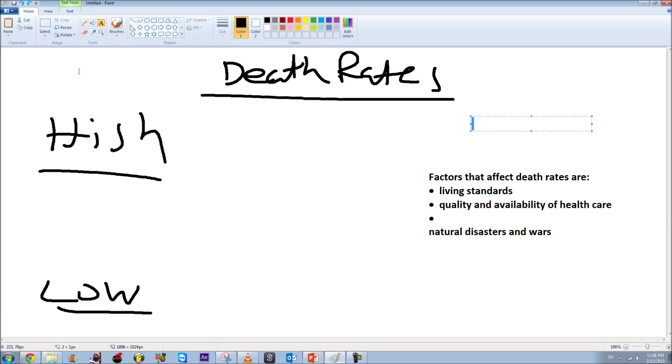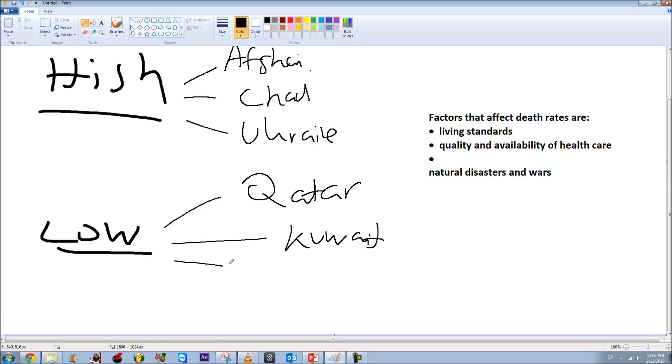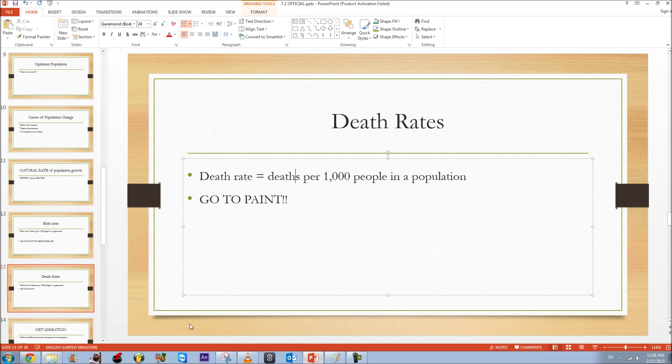Same concept with the birth rates, you have to, if you want to impress the examiner, you have to give real life examples. And high death rates they include Afghanistan, Chad, Ukraine. And as usual you can search them up on Google, this is very easy to find. Low death rates include Qatar, Kuwait, and United Arab Emirates UAE. Okay so that's death rates done.